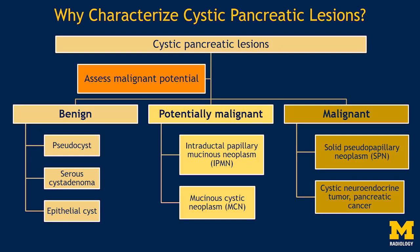The first question we need to ask is: why do we need to characterize cystic pancreatic lesions? We are trying to assess the malignant potential of these lesions to classify them as likely benign lesions such as pseudocyst, serous cystadenoma, or an epithelial cyst; potentially malignant lesions such as intraductal papillary mucinous neoplasm or mucinous cystic neoplasm; or definite malignant lesions such as solid pseudopapillary neoplasm, cystic neuroendocrine tumor, or cystic-appearing pancreatic cancer.